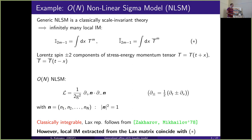To illustrate what I mean by 'difficult to quantize,' I'll consider one of the simplest theories: the O(N) non-linear sigma model. A generic non-linear sigma model is a classically scale-invariant conformal field theory at the classical level, so the Lorentz spin plus/minus two components of the stress-energy-momentum tensor are chiral — T only depends on t+x and T-bar only on t-x.